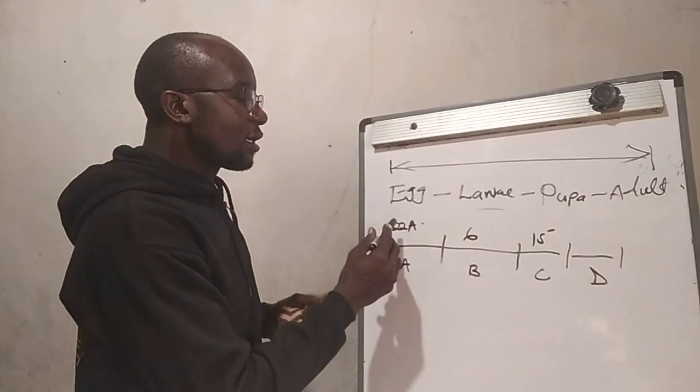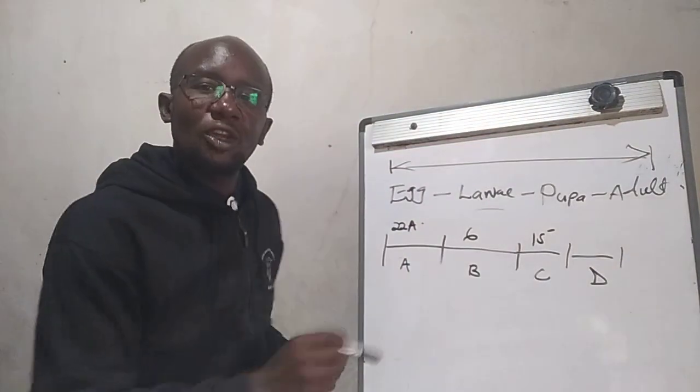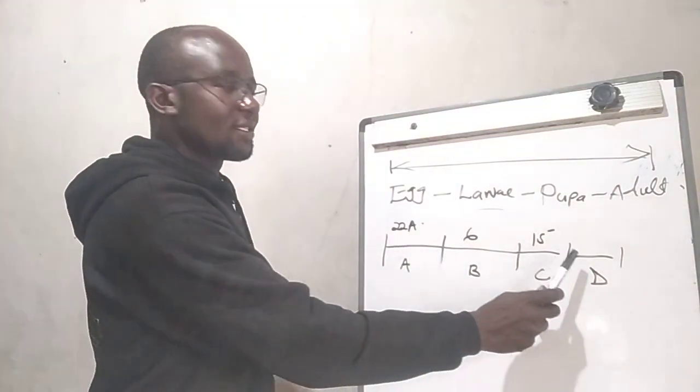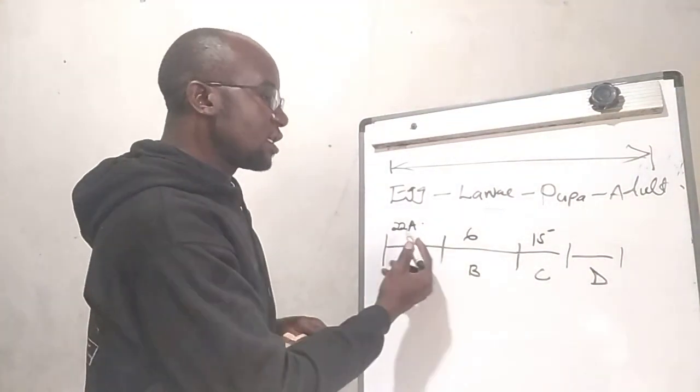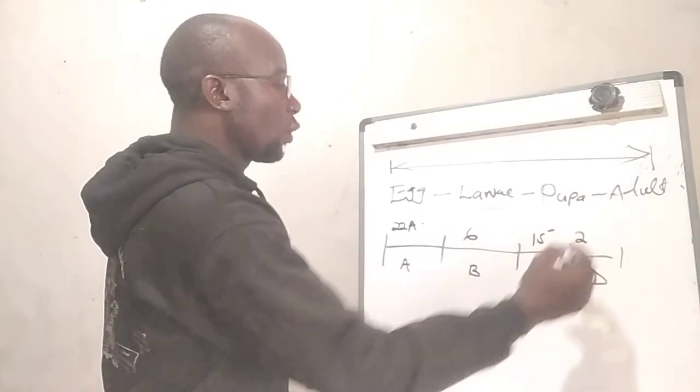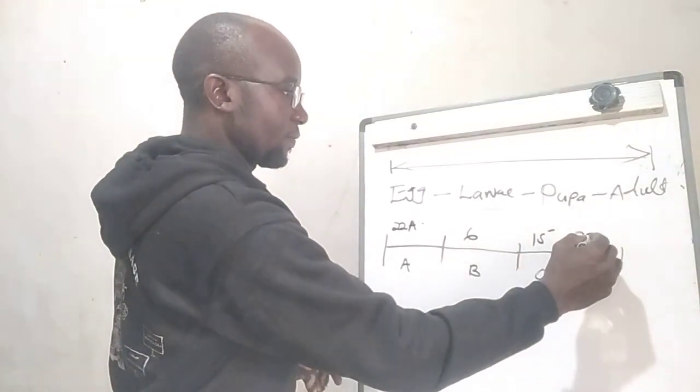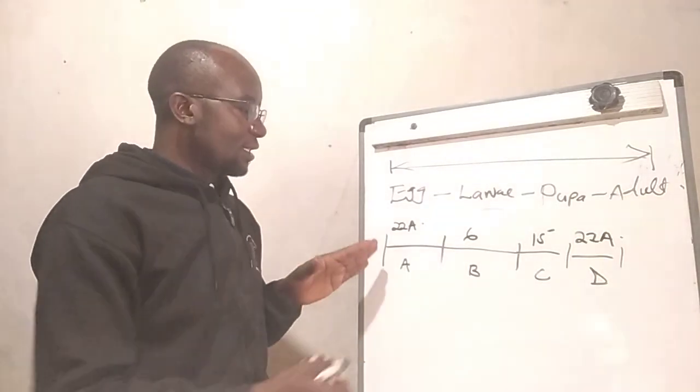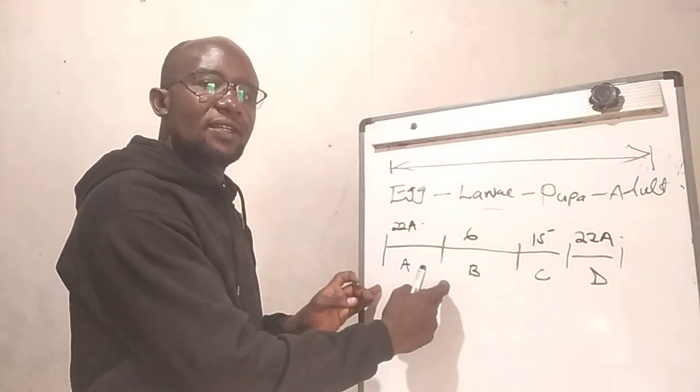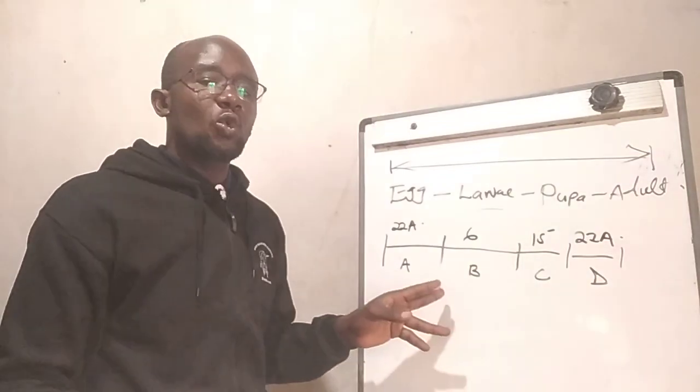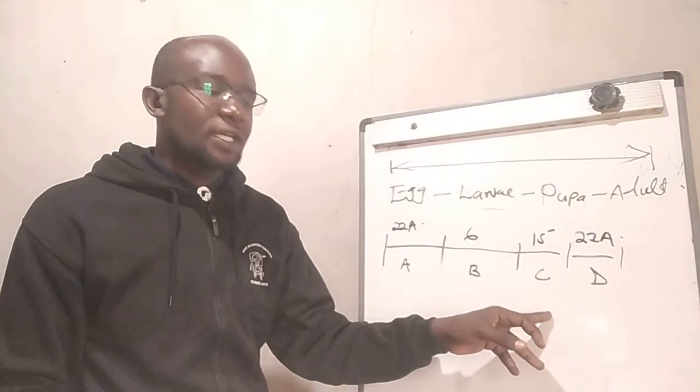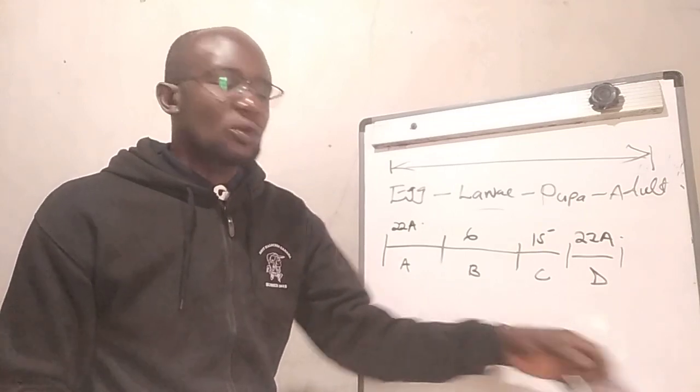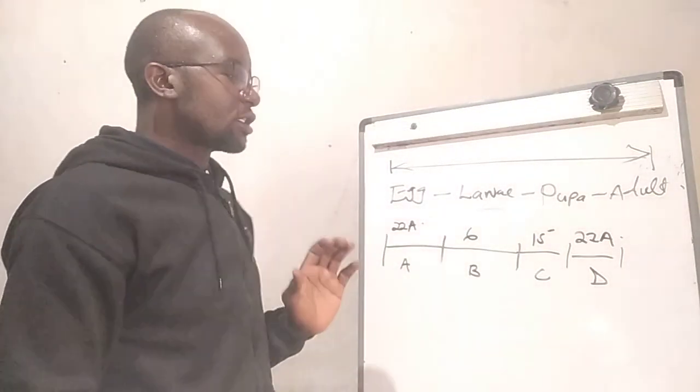It means you can only spray active ingredients that are in this group after 60 days. You can use this 22A in generation D. After spraying these active ingredients within this group, then you wait for two consecutive generations before you repeat. This you will ensure that you are not creating resistance, and you are getting a good control of Tuta Absoluta in your farm.